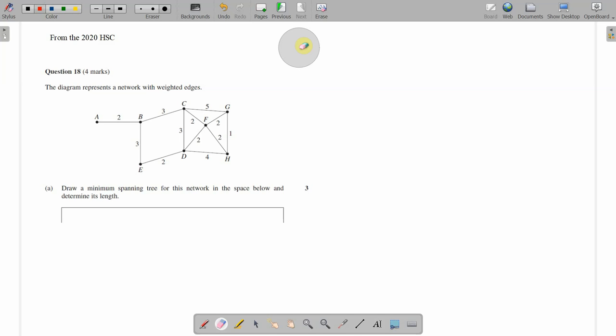Hello everyone, welcome to another networks video. This one is looking at an HSC question from last year dealing with the networks topic. This is a question worth four marks. The diagram represents a network with weighted edges. Draw a minimum spanning tree for this network in the space below and determine its length.